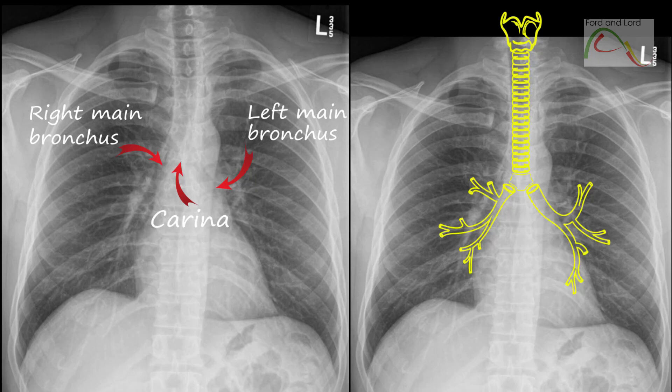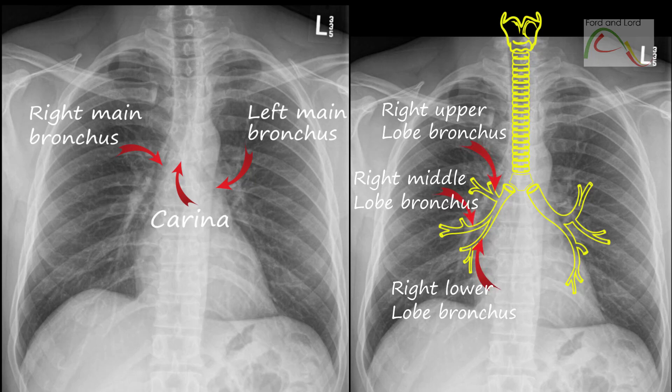The right main bronchus is wider and shorter than the left main bronchus, which is thinner and longer. The right main bronchus subdivides into three lobar bronchi, while the left main bronchus divides into two.